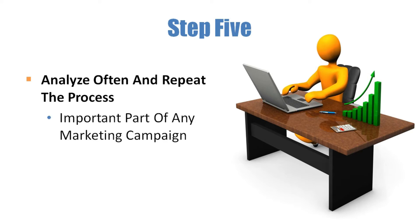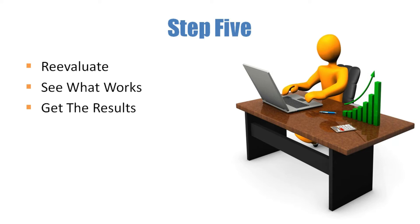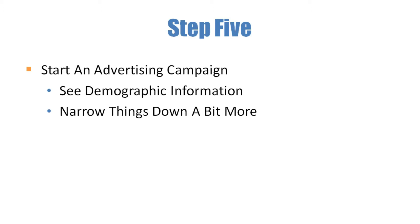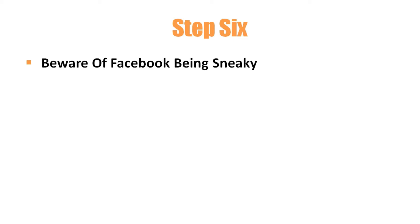Step 5: Analyze often and repeat the process. Analyzing and repeating often is an important part of any marketing campaign — you need to reevaluate and see what works to get the results you want. Your click-through rate can be increased and your total cost decreased much further once you start an advertising campaign with Facebook. Once you've started advertising, you will see demographic information and can narrow things down further to essentially get the low CPC you want.